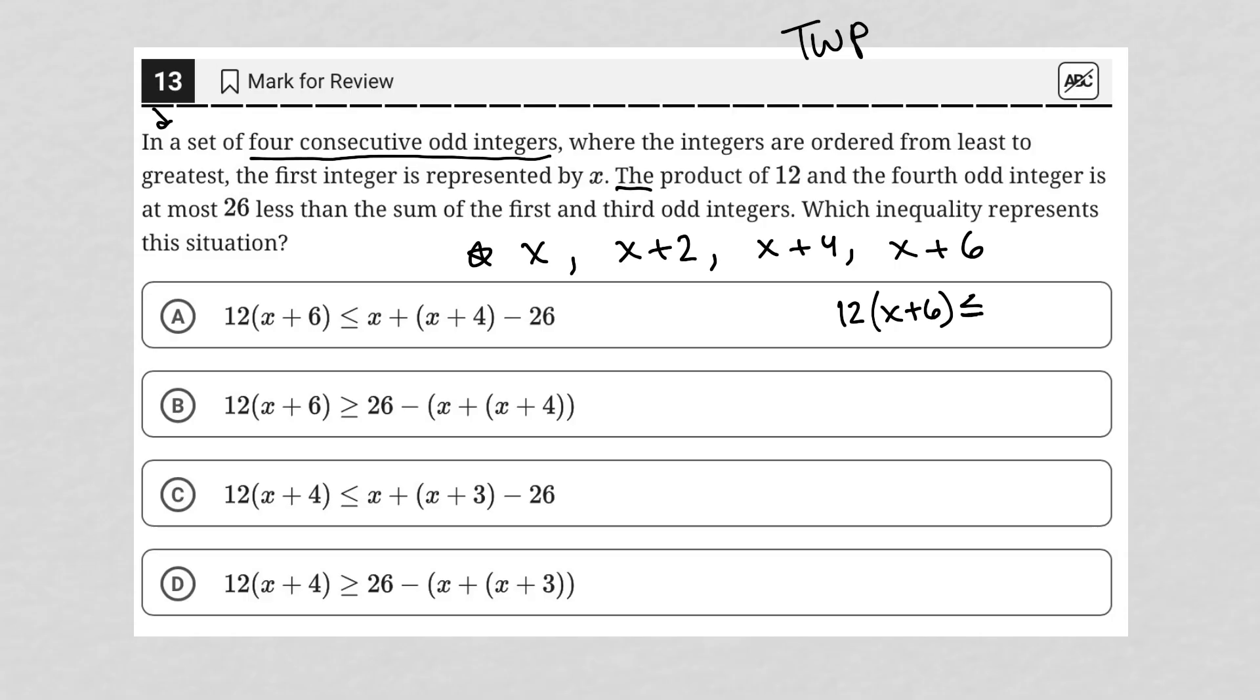So at most means it can equal it, but it can also be less than. So 12 times X plus six is less than or equal to 26 less than the sum of the first and third odd integers. So that means we're going to add the first and third, which would be X plus the third odd integer is X plus four. And then all together, we're subtracting from that sum 26.